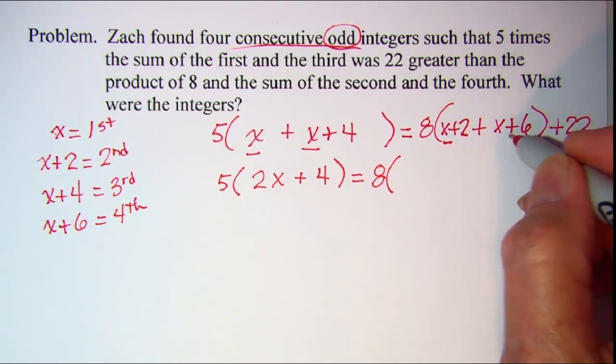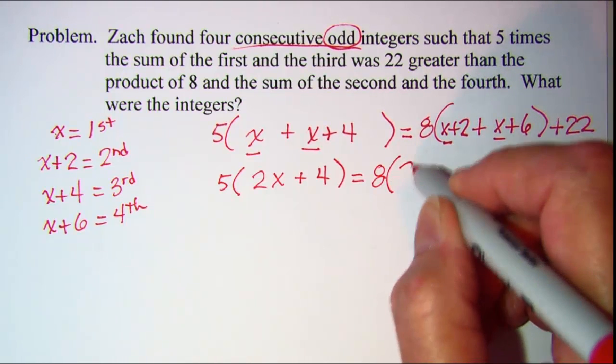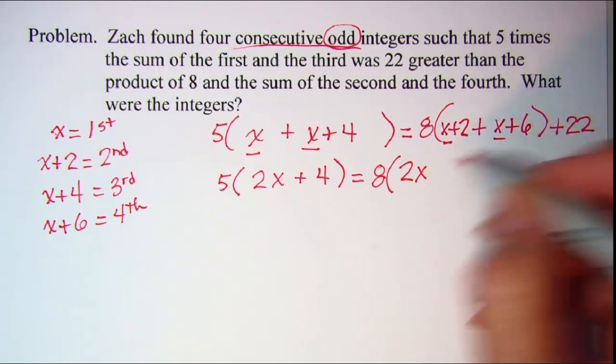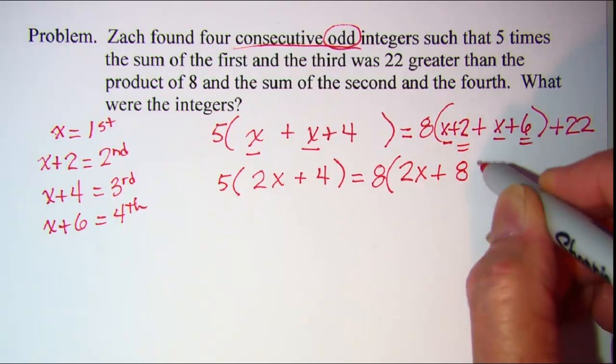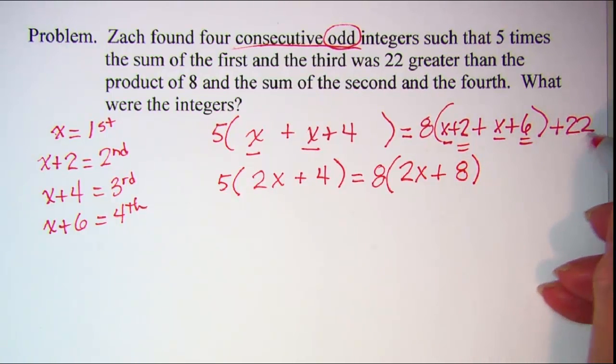Here I'm going to combine x plus x is 2x and 2 plus 6 is 8 and then just copy the rest of the equation plus 22.